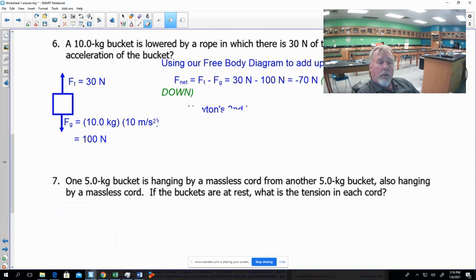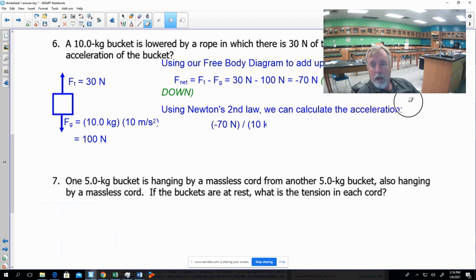Now that we know our net force, we can figure out what our acceleration is using Newton's second law. So we're going to take Newton's second law, F equals ma, F net equals ma. We're going to rewrite it so we can solve it for a. A equals F net divided by m.